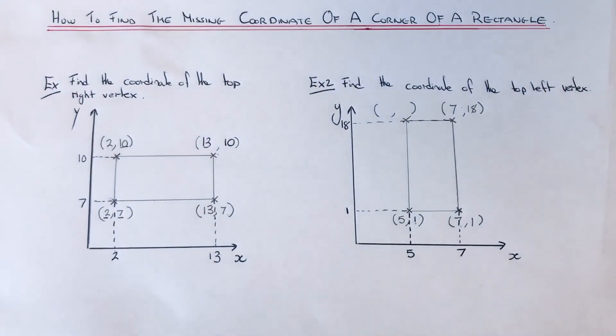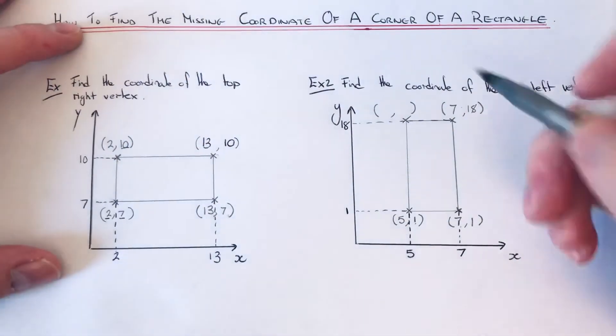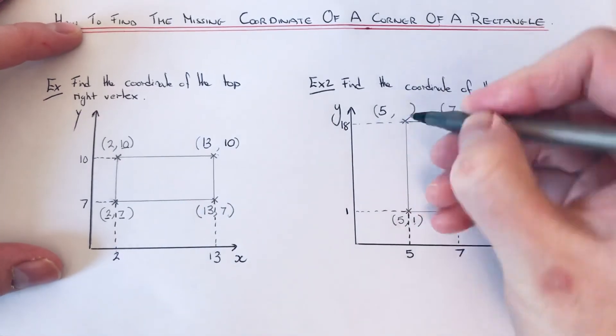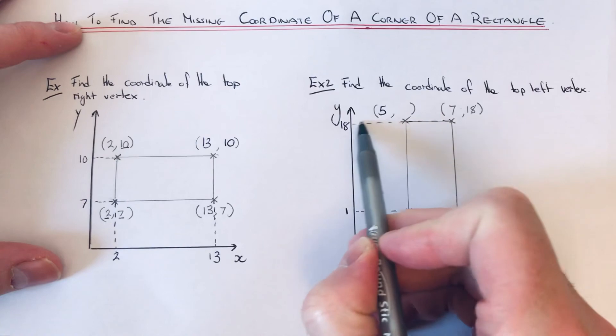We should now be able to figure out what this coordinate is. We need the x-coordinate first - if we have a look down, that is five. Then we need the y-coordinate second, which is eighteen.